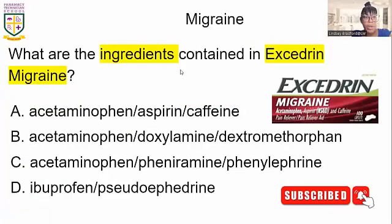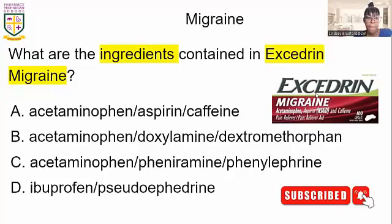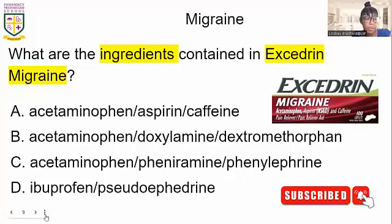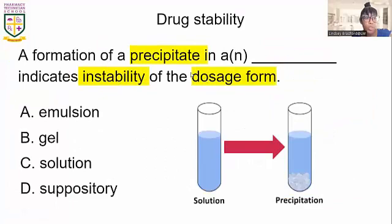Migraines — what ingredients are contained in Excedrin Migraine? That was an easy one. This is an OTC medication, and the answer is A. Migraine medication is not going to have pseudoephedrine in it.